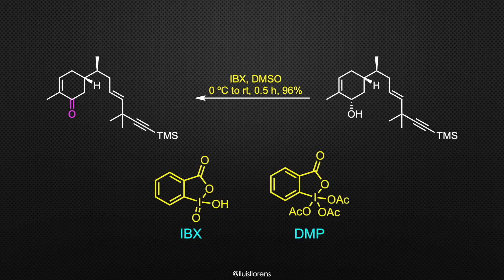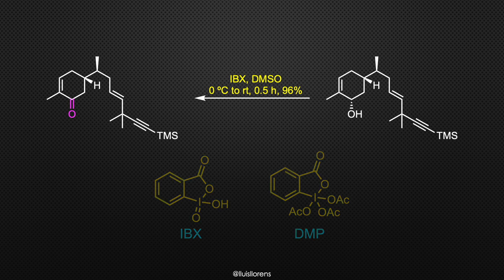IBX, 2-iodoxybenzoic acid, is a hypervalent iodine compound of similar structure to the Dess-Martin periodinane, DMP. However, DMP is far more soluble in organic solvents and hence often the reagent of choice.